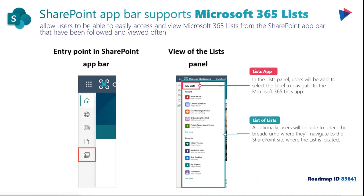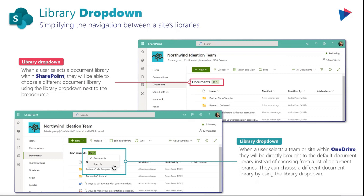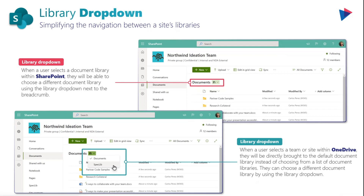Next up is Microsoft Lists. The SharePoint app bar now supports Microsoft Lists, and when you click on the Microsoft Lists icon you have access to your lists tab or can view lists being displayed, including a recent and favorites listing. Microsoft is also adding a library navigation dropdown for team sites where you've created multiple document libraries. The dropdown will list all the libraries and make it easy for users to switch between them.